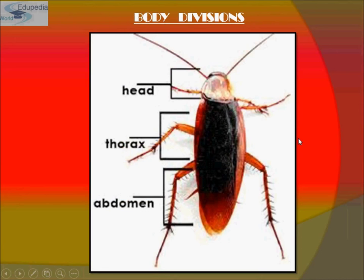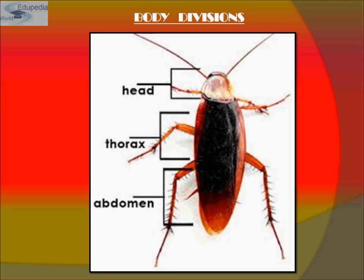Now come to body divisions. The entire body is covered by a hard chitinous exoskeleton, which is brown in color. The body has three divisions: head, thorax, and abdomen. In each segment, the exoskeleton has hardened plates called sclerites, joined to each other by a thin and flexible articular membrane.